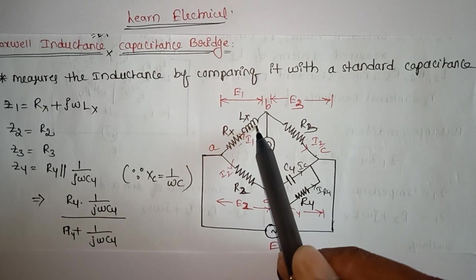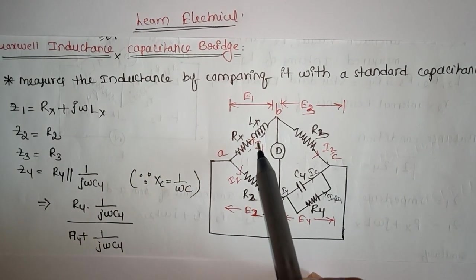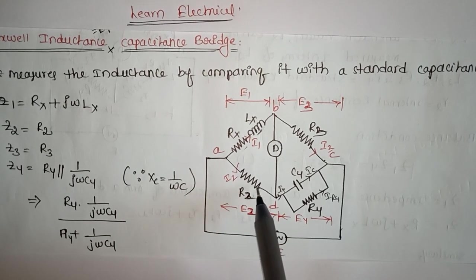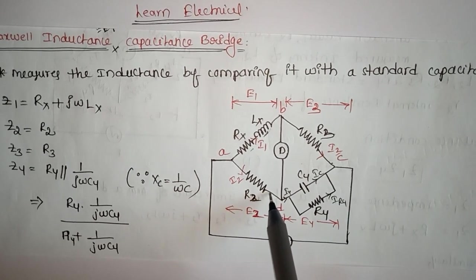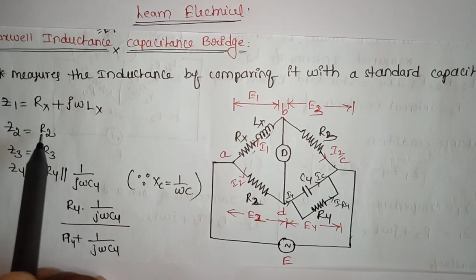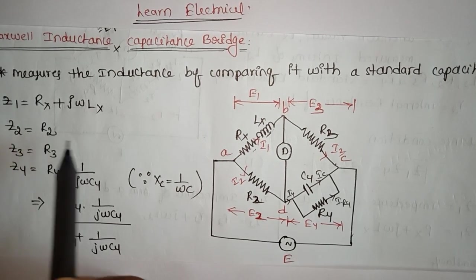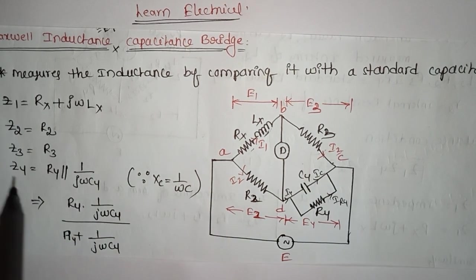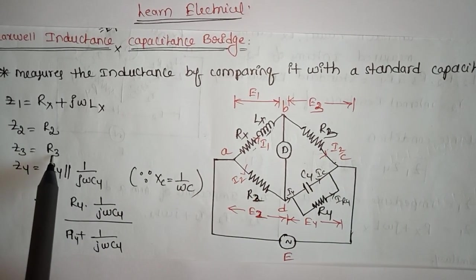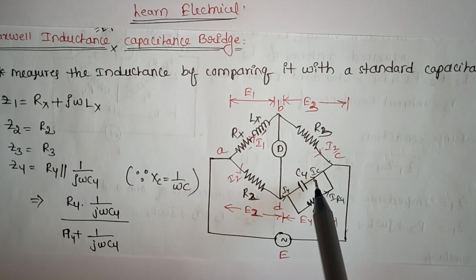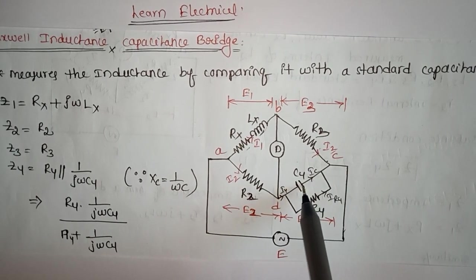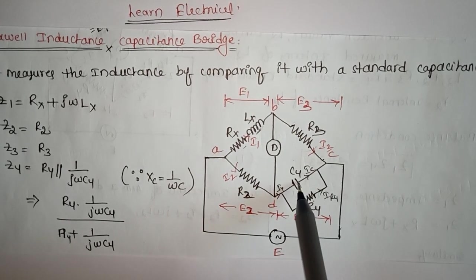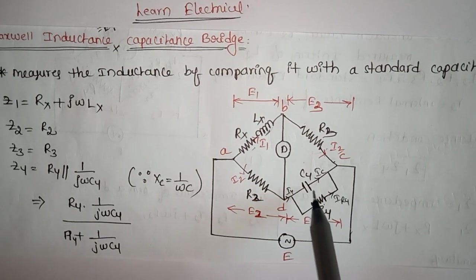The impedance of arm two consists of only resistance — there is no inductance present — so Z2 = R2. In arm three, only resistance is present, so Z3 = R3. In arm four, we have a capacitance in parallel with a resistance, so we write the parallel circuit equation.